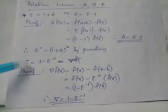Backward difference operator del equals 1 minus e inverse, that is, backward difference operator equals 1 minus inverse shift operator. Let's look at the proof.